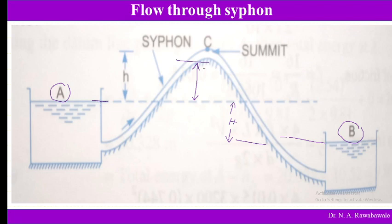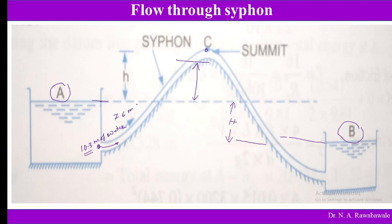As the pipe passes from the higher level reservoir to the lower level, it rises above the water surface level of the upper reservoir. This is created due to vacuum or suction created by the flow of liquid. The highest point of the siphon is known as the summit. So this point C is known as the summit.